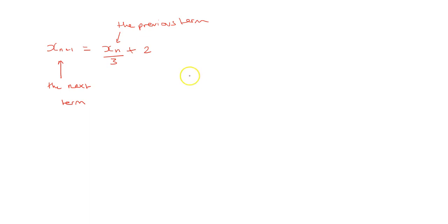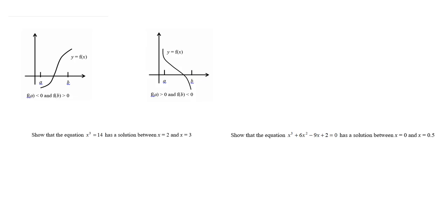There are four main question types on this. The first is showing how something has a solution between two values. The easiest way is to rearrange your formula equal to zero. If we have two values a and b with the equation equal to zero, if a is negative and b is positive then that solution must be between those two values, because the only way it crosses the x-axis is by going from negative to positive. Similarly, if the first value is positive and the second negative, there must be a solution in between.